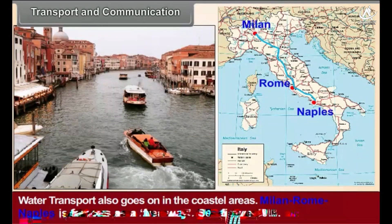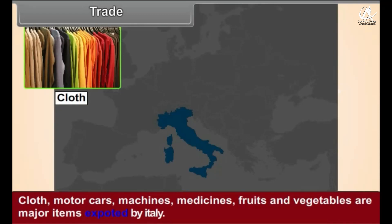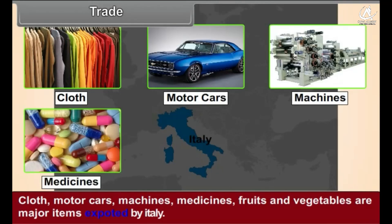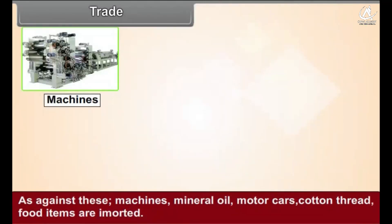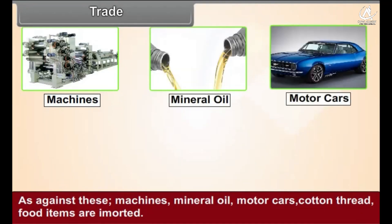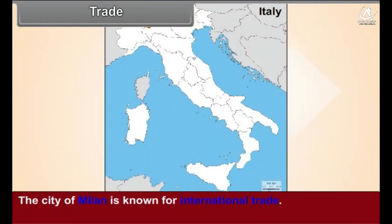Trade: Other European countries are the major trading partners of Italy. Cloth, motor cars, machines, medicines, fruits, and vegetables are major items exported by Italy. As against these, machines, mineral oil, motor cars, cotton thread, and food items are imported. The city of Milan is known for international trade.